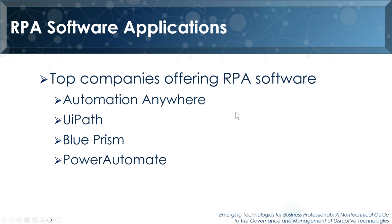There are three or four main RPA software applications: Automation Anywhere, UiPath, Blue Prism, and Microsoft's Power Automate. Each has slightly different features. Power Automate, being a Microsoft product, probably focuses a bit more on other Microsoft products, but they all work with a variety of software packages. Depending on the types of processes you plan to implement, it's best to evaluate which software would be the right fit for your organization.